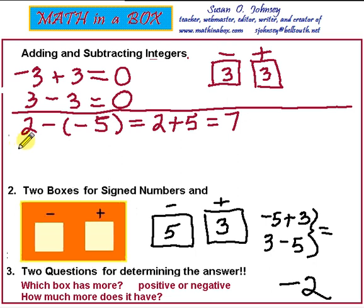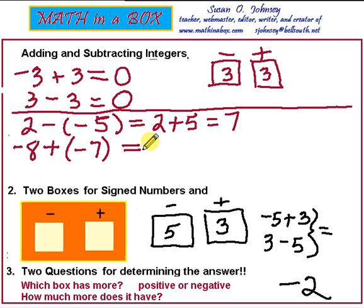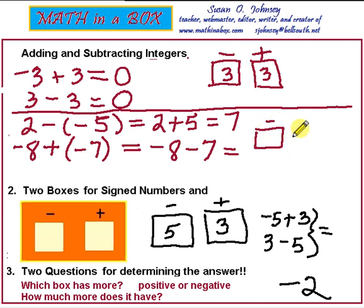Let's look at the problem negative 8 plus negative 7. We again have double signs — there's a plus and then a negative. Remember, you can sometimes ignore positive signs, so we rewrite this as negative 8 minus 7, ignoring the plus and dropping the parenthesis. Now you're ready to use the boxes. The 8 goes in the negative box and so does the 7 — they are both negative numbers. Which box has more? The negative box has more. How much more? It has 15 more.